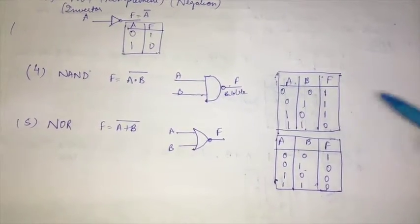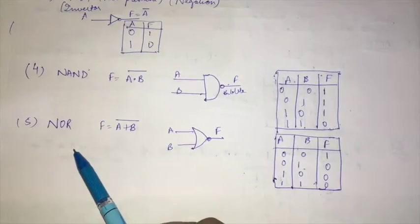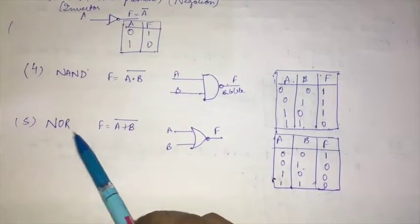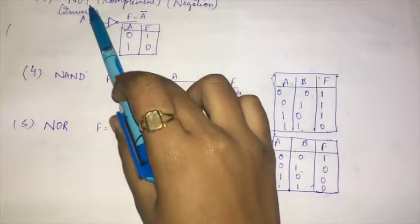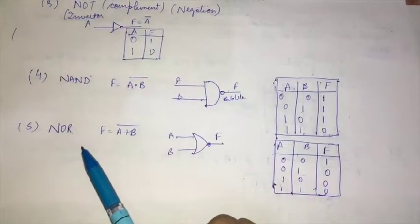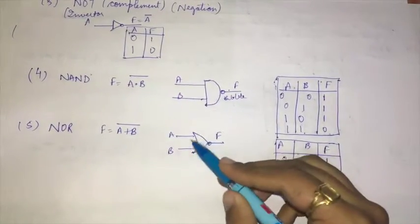The NOR gate is the complement of the OR gate—NOT and OR combined give NOR. This is the OR gate with a bubble denoting the complement, and this is the truth table for the NOR gate.